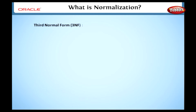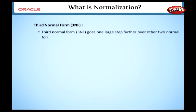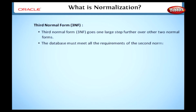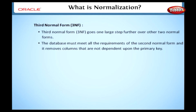Third normal form, 3NF, goes one large step further than the other two normal forms. The database must meet all the requirements of the second normal form, and it removes columns that were not dependent upon the primary key. Here the primary key is nothing but a column in a table.